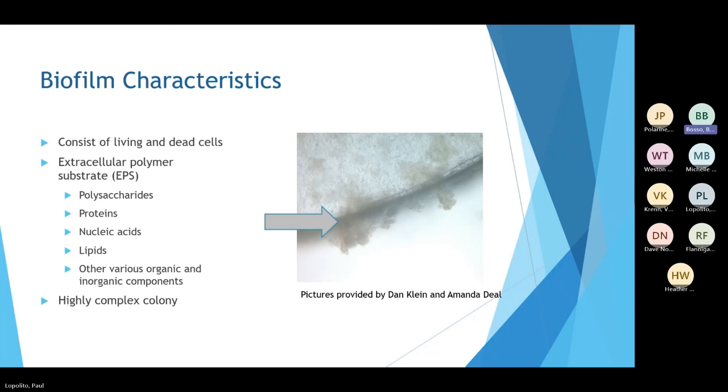The first step to remediating and preventing biofilm is to understand biofilm characteristics. Biofilm is a highly complex community of microorganisms. It's composed of multiple types of cells, both living and dead. Additionally, it's composed of self-produced extracellular polymeric substance, EPS.